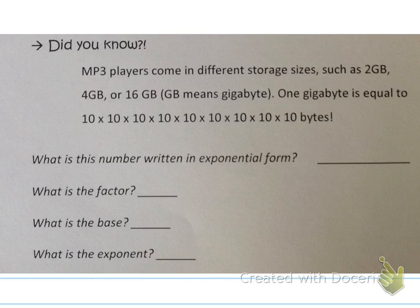The first question says, what is this number written in exponential form? But it will be easier for us to answer the other three questions first. So first, let's identify the factor. What number is being multiplied over and over again? Well, that's 10. So here we're going to put 10 for the factor.